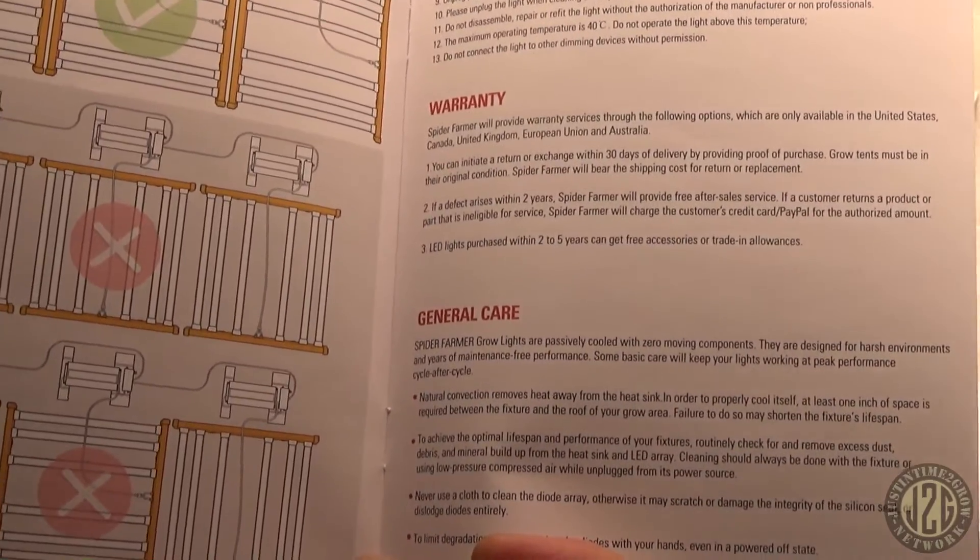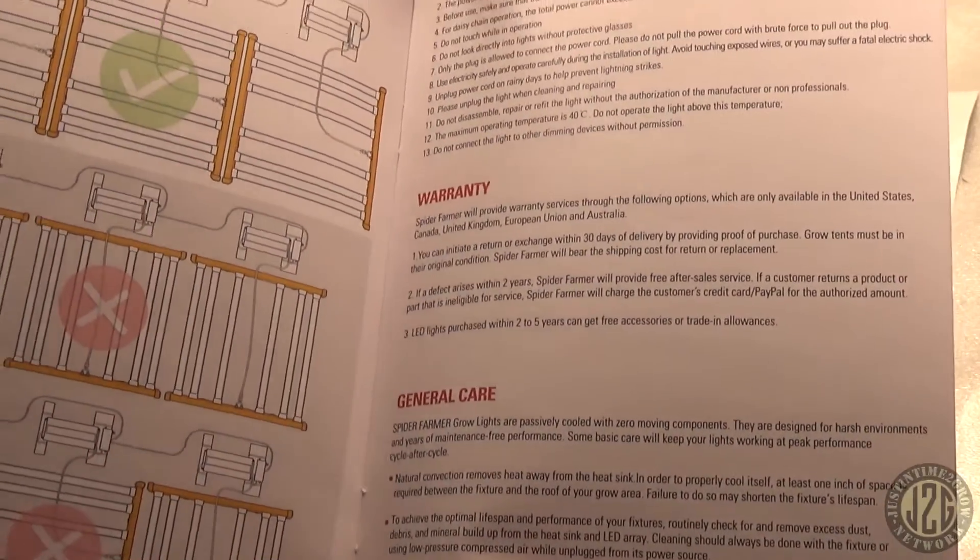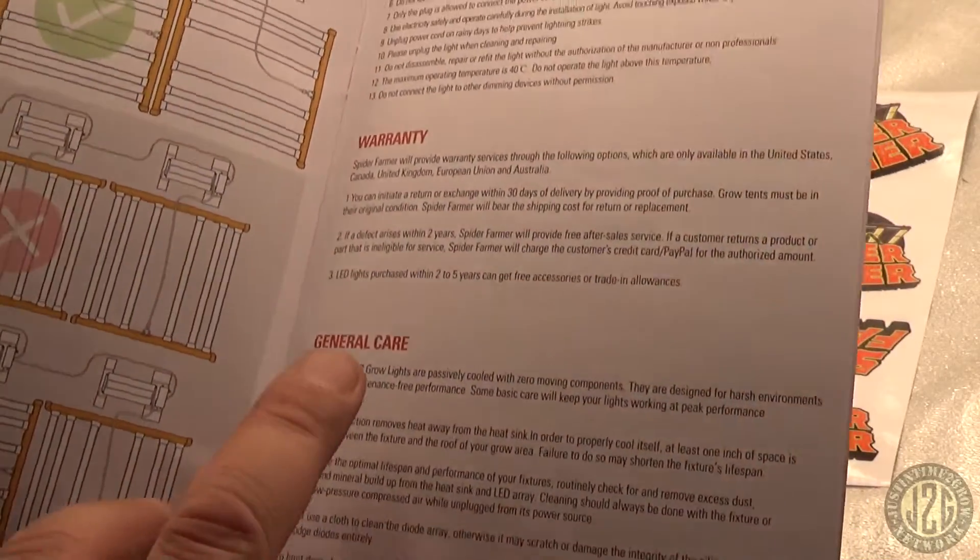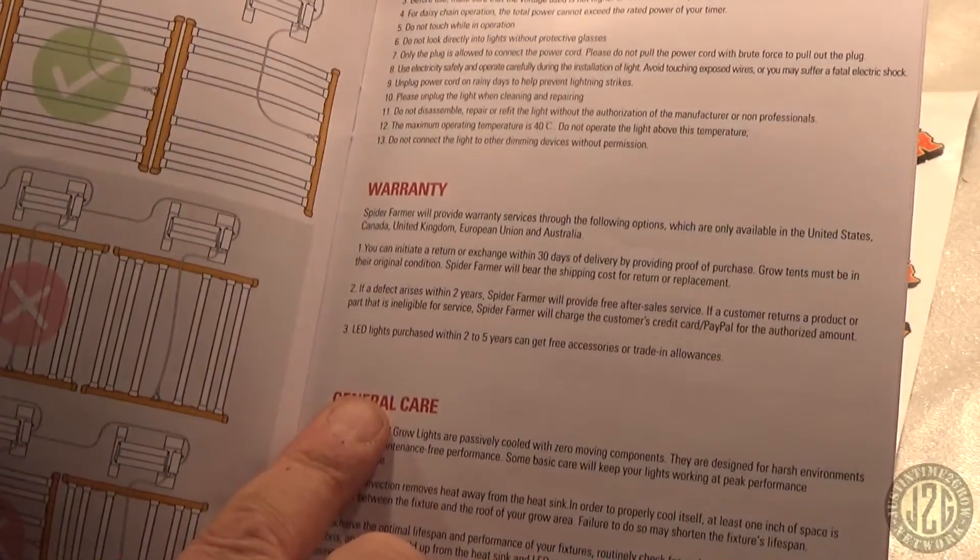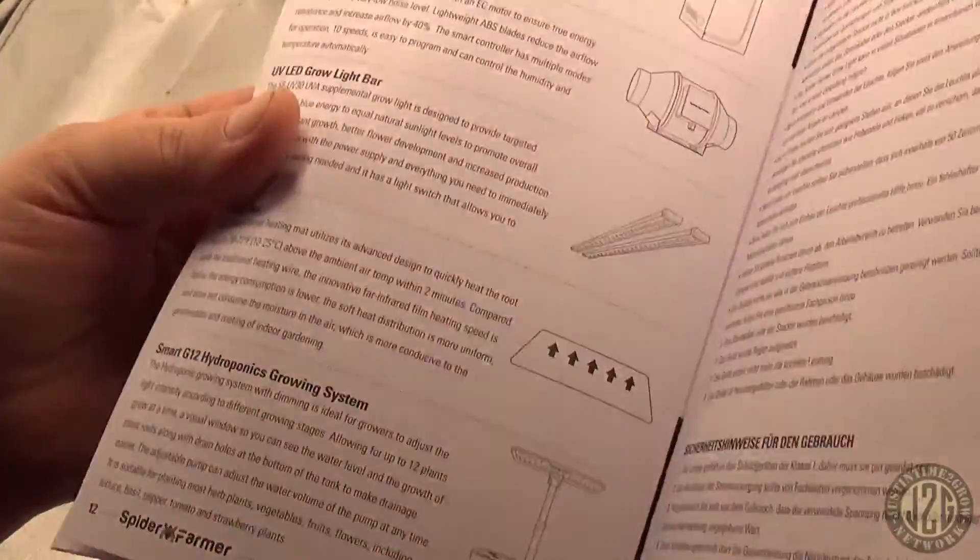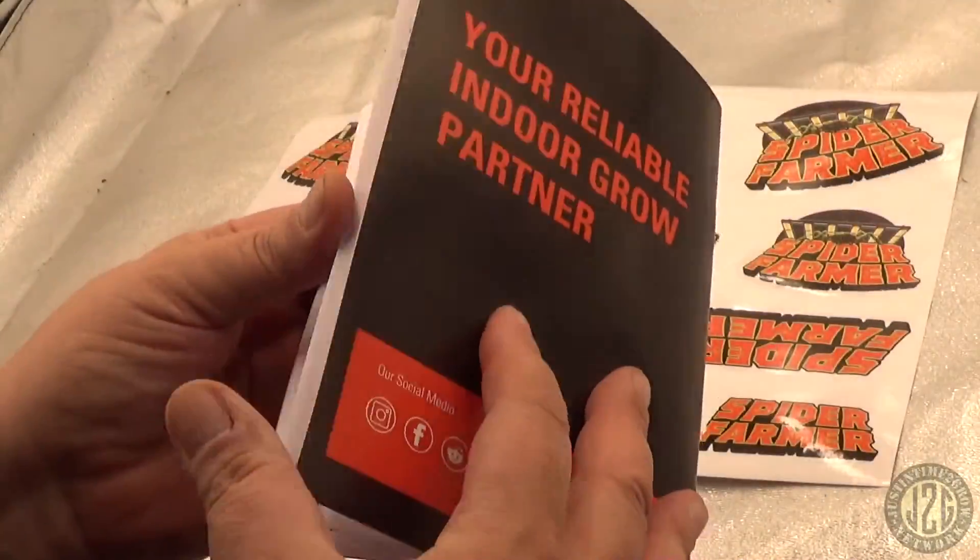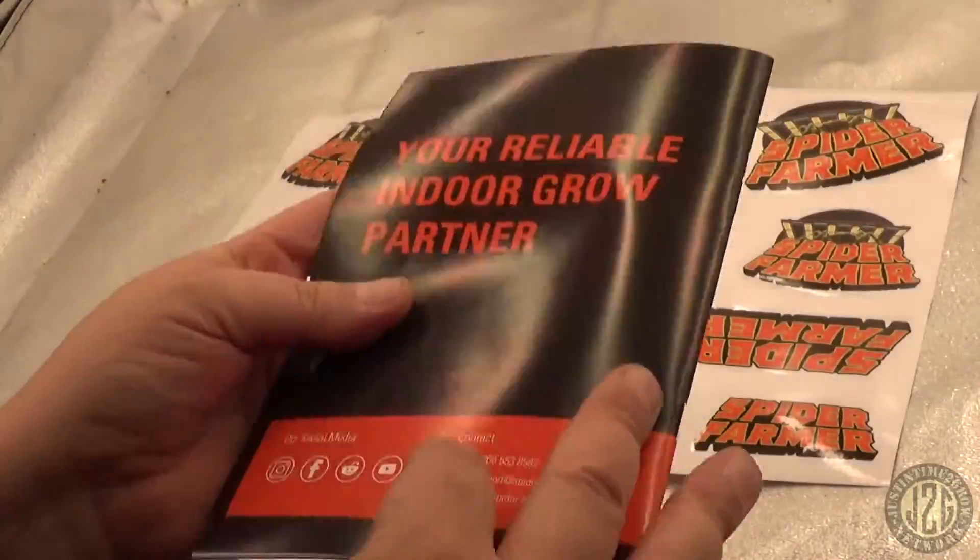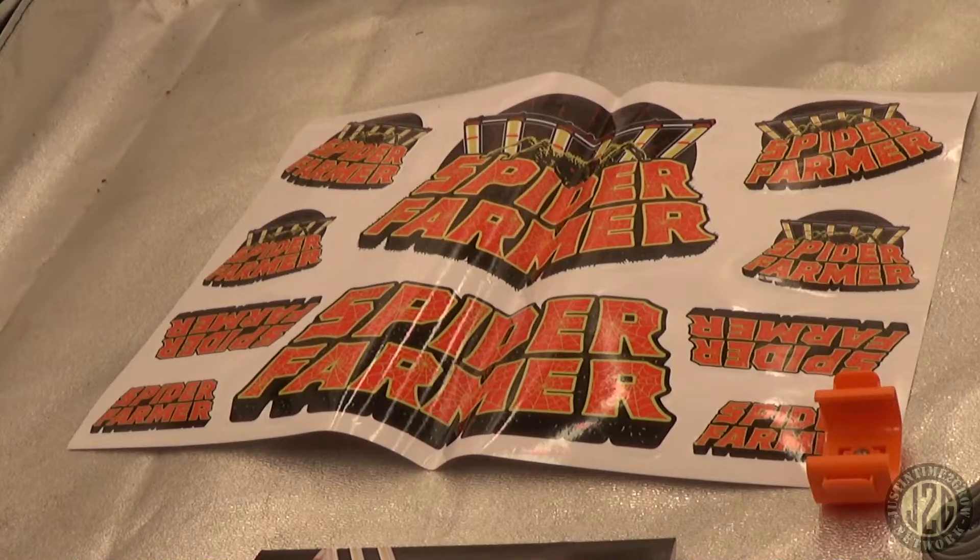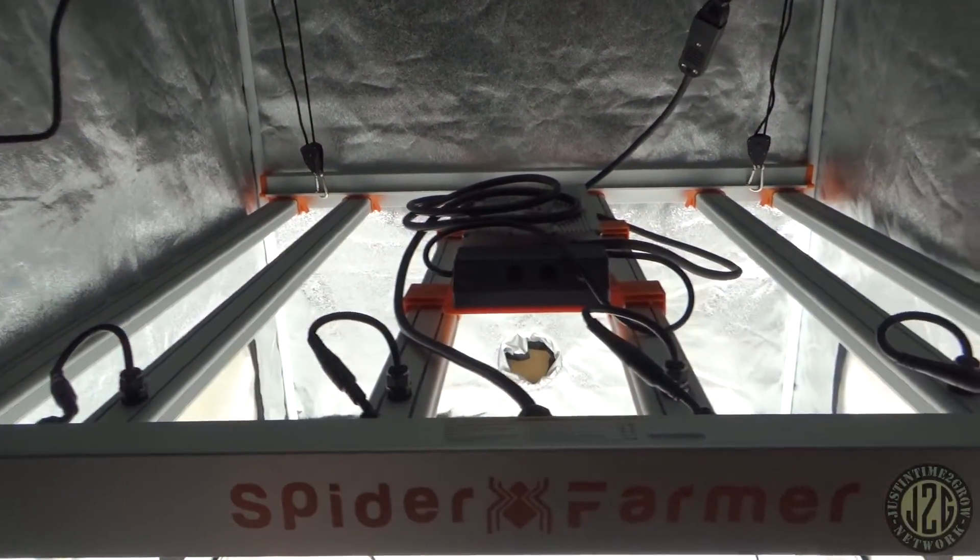It sounds like they might swing a deal with you since it's old and maybe give you credit towards a new light, something like that. Their warranty is changing all the time, so is Mars Hydro and a lot of the other companies. But this is better than it was. This is an improvement on their warranty, so that's good. Other accessories: grow tents, fans, heat mats, all that stuff. That's about it. Let's kick on the par meter and get some numbers on this thing.